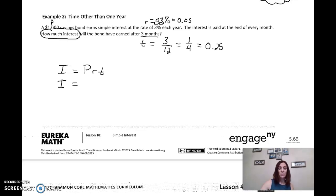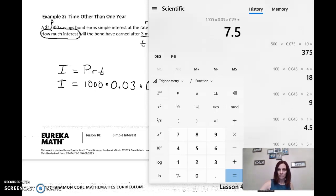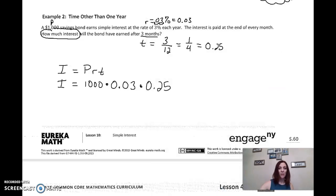So interest equals principal times rate times time. So our interest equals our principal, which we said here is $1,000 times our rate. Our rate, remember, is a decimal. 0.03 times our time. And in this case, our time is 0.25. Type that into a calculator. 7.5. So interest equals 7.5. But it's money, right? Interest is the amount of money we earn. So I'm going to write it with a dollar sign and then add a 0. $7.50.